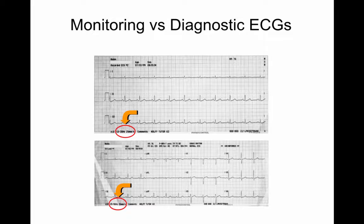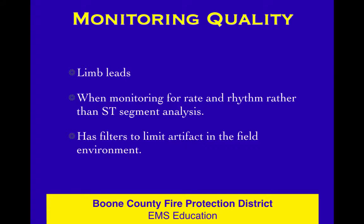Monitoring versus diagnostic EKGs: when you look at the same EKG on a person in monitoring quality and then again in diagnostic quality, different things will show up. Diagnostic quality is where you can determine ST elevation. Monitoring quality is great — it works in limb leads and gives you rate and rhythm. There's not going to be any difference in rate or rhythm on a diagnostic quality EKG from what you're seeing in monitoring quality. You just can't look at ST segment analysis unless you're in diagnostic quality. There's all kinds of interference in the field that causes artifact, so filters are in place to help you get a clean tracing for rate and rhythm — you just cannot use that for all pieces of analysis.